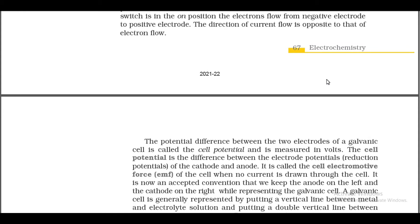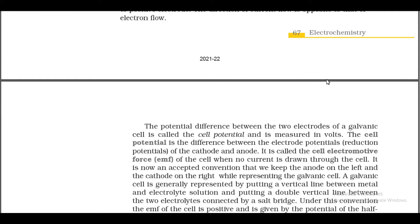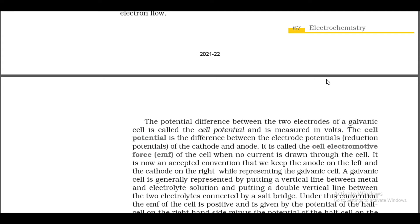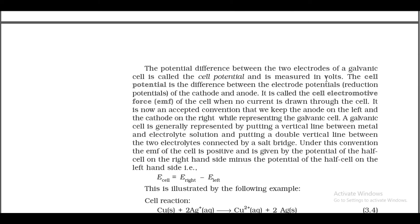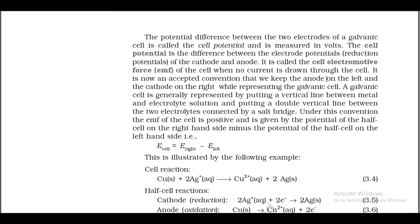By accepted convention, the anode is kept on the left and the cathode on the right when representing a galvanic cell. A galvanic cell is represented by a vertical line between metal and electrolyte solution and a double vertical line between the two electrolytes connected by a salt bridge. The EMF of the cell is given by: E_cell = E_right − E_left.